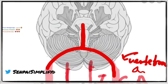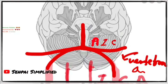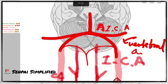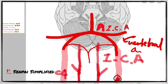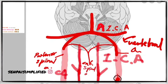Before they join each other, from the basilar artery it gives off two arteries: the anterior inferior cerebellar artery. It also gives off the anterior spinal artery and the posterior spinal artery from either side.